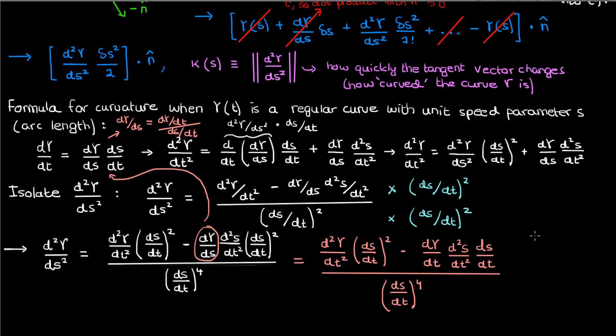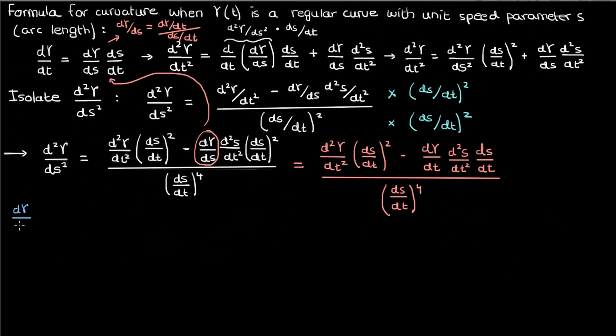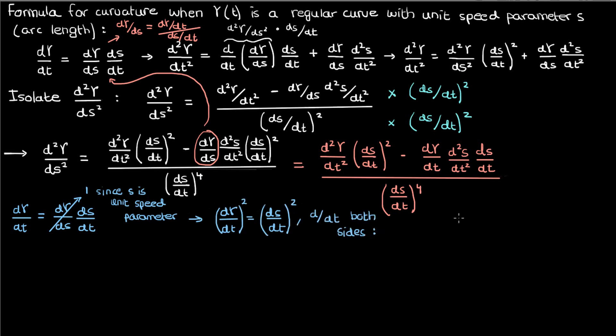Now since s is the unit speed parameter, we know that d gamma by ds is just 1, it's a unit vector, which means that given this equation for d gamma by dt, this would mean that d gamma by dt is equal to ds by dt. There's a unit vector in there as well, but I haven't written it down just for simplicity. If we square both sides of the derivative equation and differentiate the whole equation with respect to t, here's what we'll get after we apply the product rule.